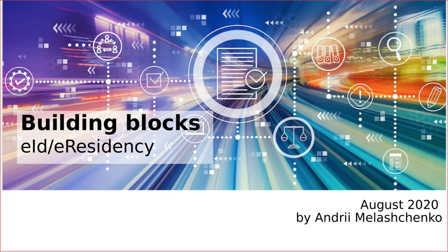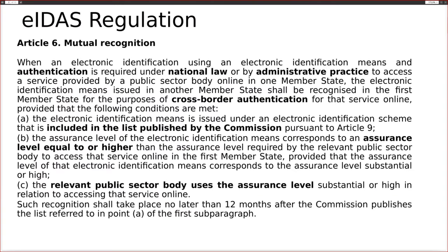Let's start our webinar on the electronic identification building block. E-residency is an opportunity for Eastern Partner countries to use this building block to build e-residency services for European citizens. The EIDAS regulation has a second part that defines explicitly e-identification services in the European Union. Unfortunately, identification inside the EU and EIDAS regulation do not have any articles on mutual recognition of identification schemas outside of the European Union.